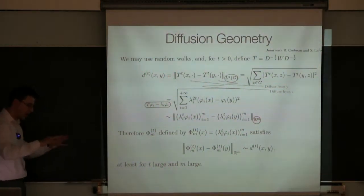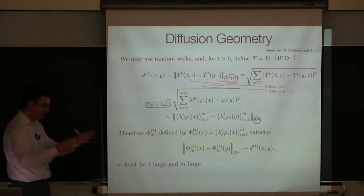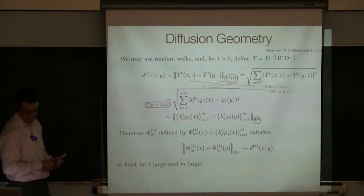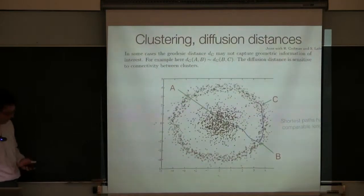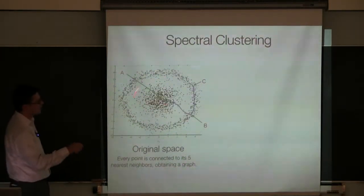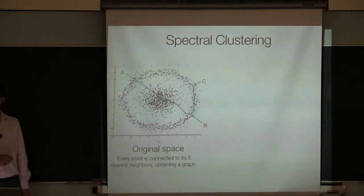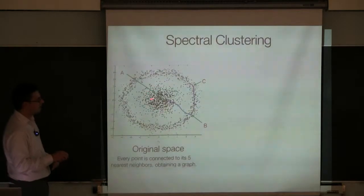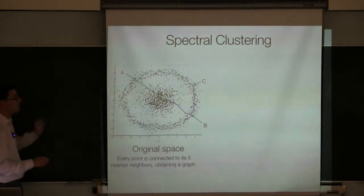So this diffusion map is really trying to understand which points can really talk very quickly to each other by short random walks versus points which are really far away. And just to show you one such example, this is an example where you have two clusters but their shape is kind of odd.